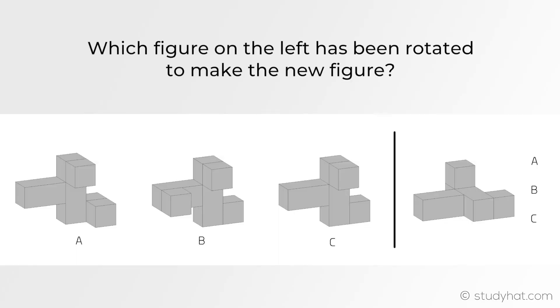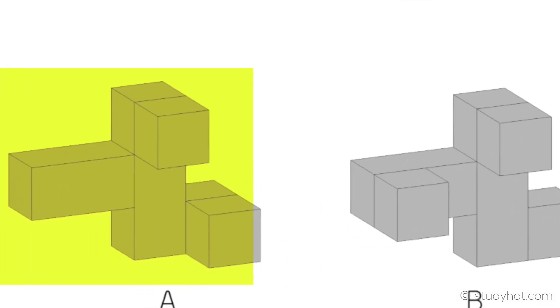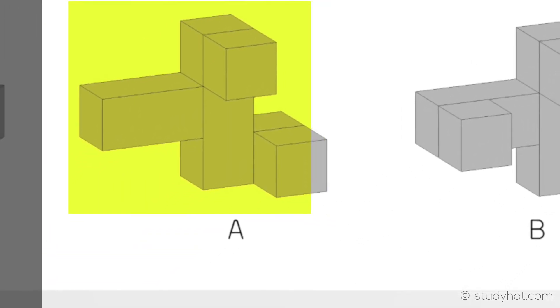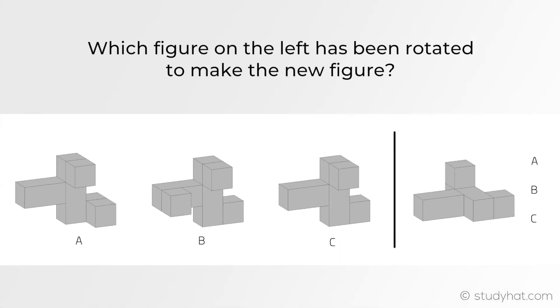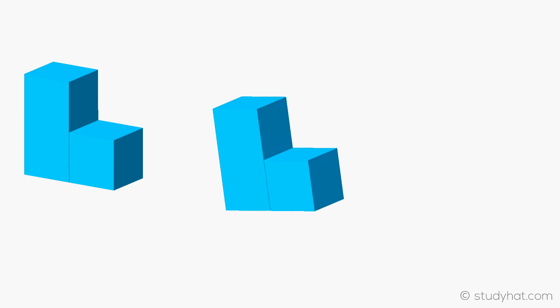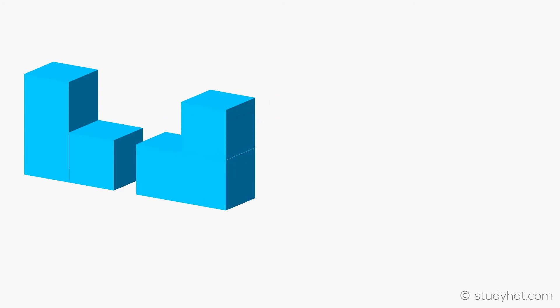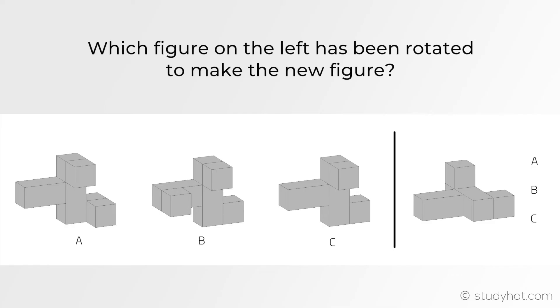The next question says, which figure on the left has been rotated to make the new figure? Starting off with A, let's take a look at which way it is being rotated. Well, it isn't going to be rotated sideways, it's being rotated top to bottom instead. Now even though it is rotating downwards, that would mean that this cube here would now be positioned facing upwards. However, the figure we're looking at doesn't have that extra cube facing upwards, so therefore A isn't the right answer.